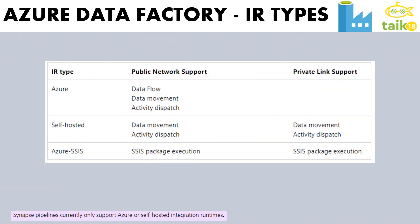There are three kinds of integration runtime available in Azure Data Factory and Synapse Pipeline. Azure IR supports public network and private link, and enables data flow, data movement, and activity dispatch. The second type is self-hosted, which supports data movement and activity dispatch but not data flow, and only on public network. The third type is Azure SSIS package, available on both public and private network support.